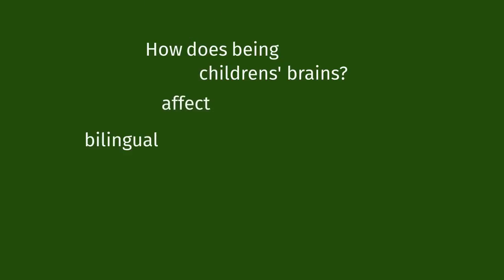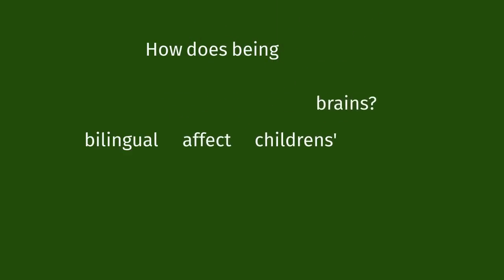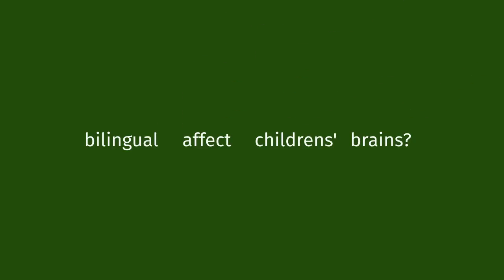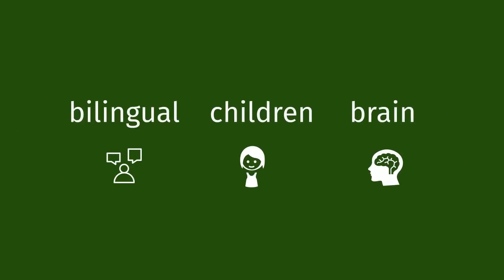First, we want to pick out only those words that are directly related to our research question and eliminate the ones that are not going to help us much. How, does, and being are not words specific to our research question, so we're not going to use them. What about effect? It could help, but it could also appear in a lot of information not directly related to our question, so let's eliminate it for now. That leaves us with three great keywords: bilingual, children, and brain.